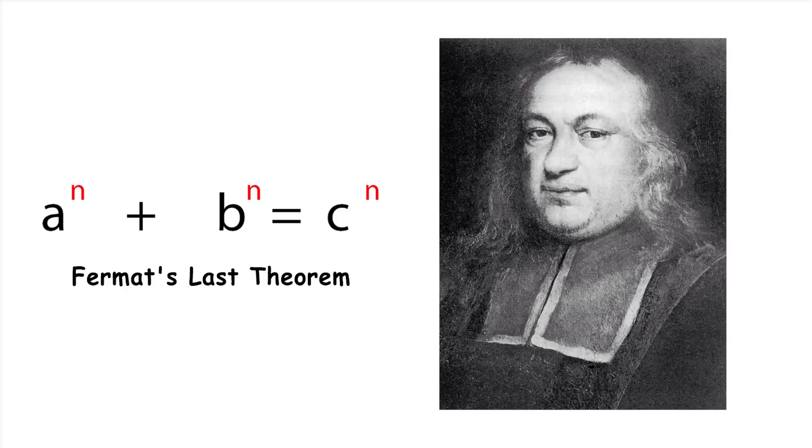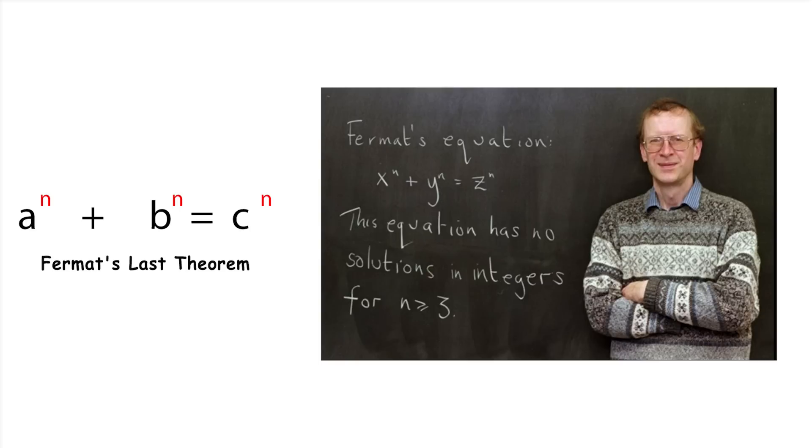Fermat's Last Theorem. Fermat's Last Theorem states that there are no whole-number solutions to the equation X raised to the power of N plus Y raised to the power of N equals Z raised to the power of N, for N greater than 2. This means that you can't split a cube into two smaller cubes, a fourth power into two fourth powers, and so on, using whole numbers. The theorem was a mystery for over 350 years until it was proven in 1994 by Andrew Wiles.